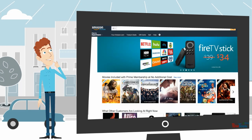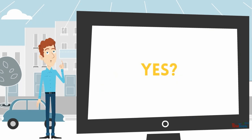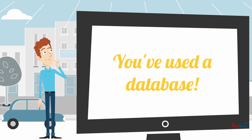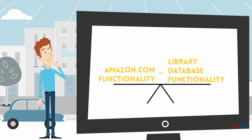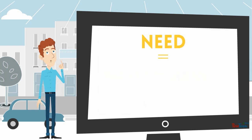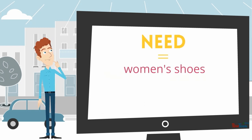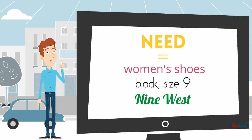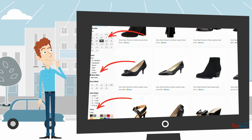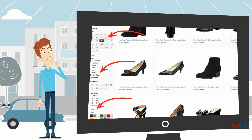Have you ever used Amazon.com to shop? If you answered yes, then you've used a database. Amazon.com uses the same functionality that our library databases use. You have a need — let's say, women's shoes that are black, size 9, and from 9 West. On Amazon, you check off those components on the sidebar and Amazon retrieves only those results.